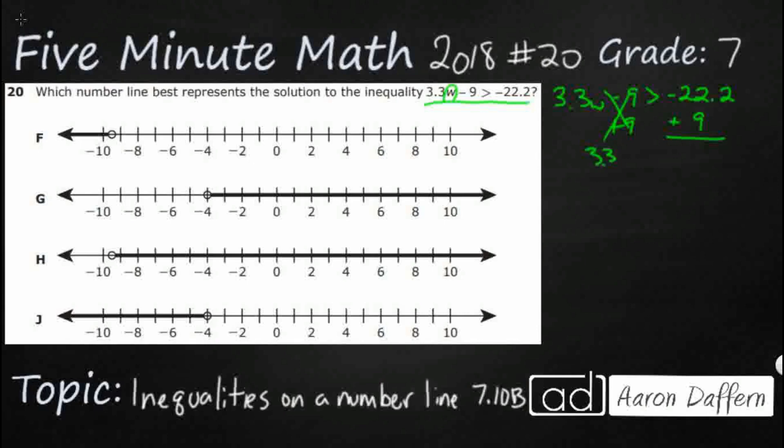So I've got 3.3W is greater than negative 22 plus 9. So that's going to be negative 13.2.